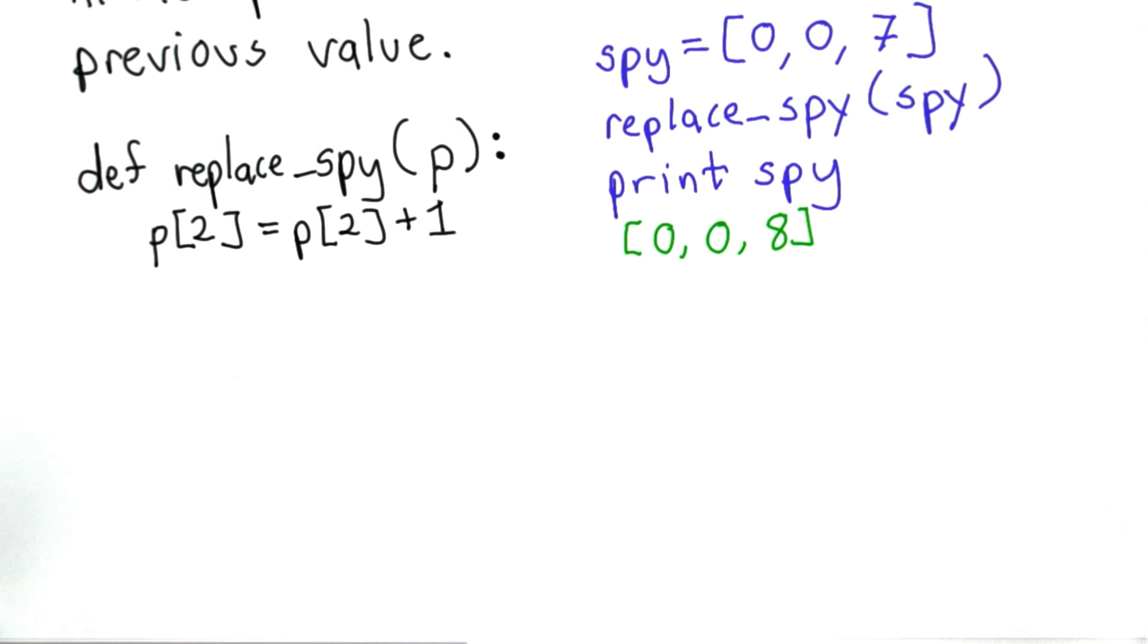So this has the behavior that we want, and to have a better understanding why, let's see what happens when we pass a value to our procedure. So here's what we had before the call.